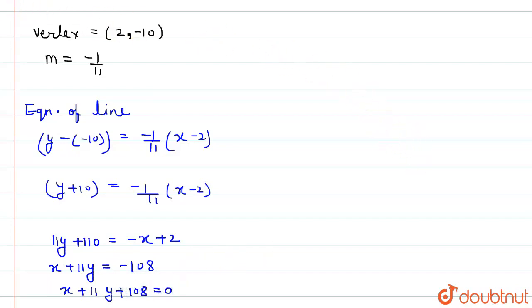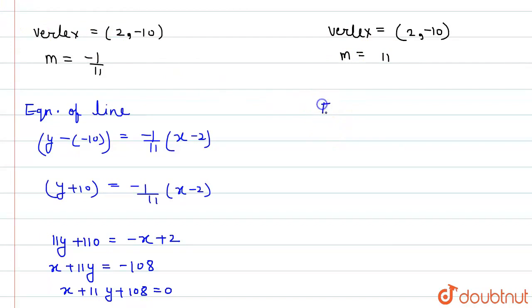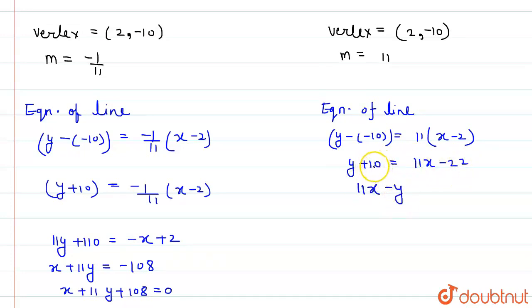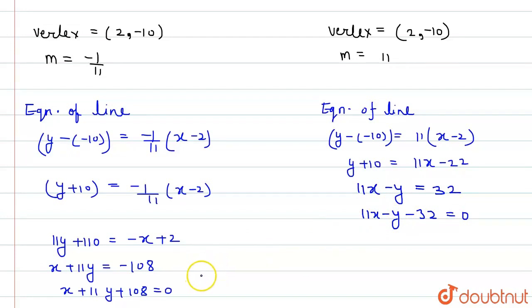Now taking the negative sign case with slope m = 11 and the same point (2, -1): y - (-1) = 11(x - 2), which gives y + 1 = 11x - 22, so 11x - y - 23 = 0. These are the equations of the two lines. I hope you understood it, thank you.